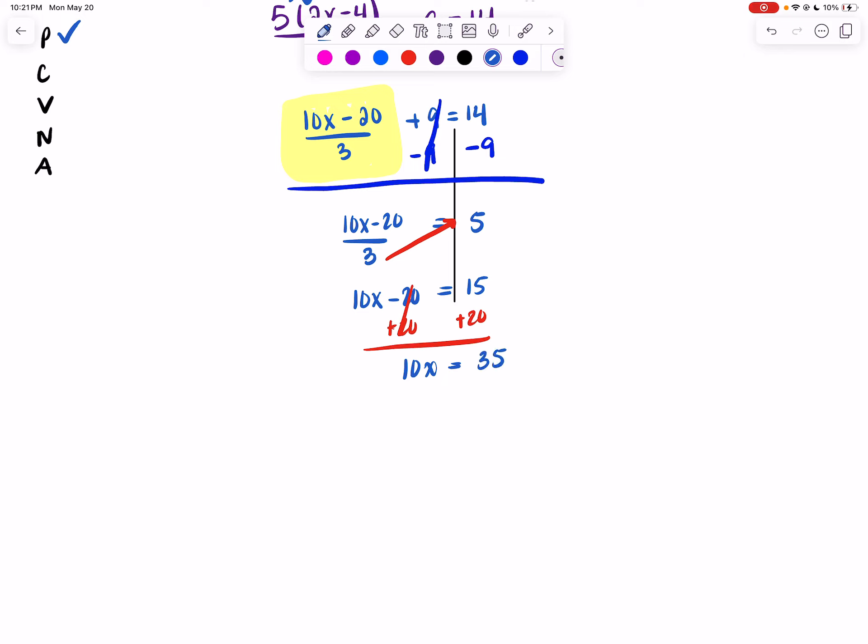And now I ask myself, how do I get rid of the 10 that's attached to my x? Well, I divide it. So I divide by 10, divide by 10, 10s cancel. And now I get x is equal to 3.5.